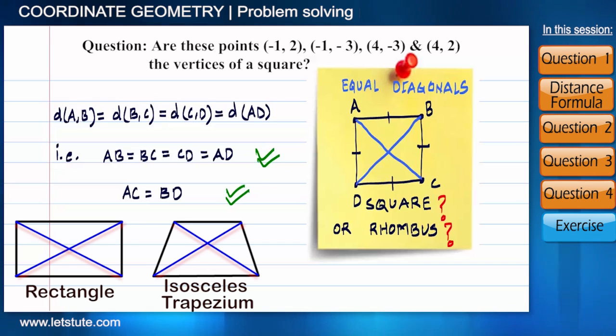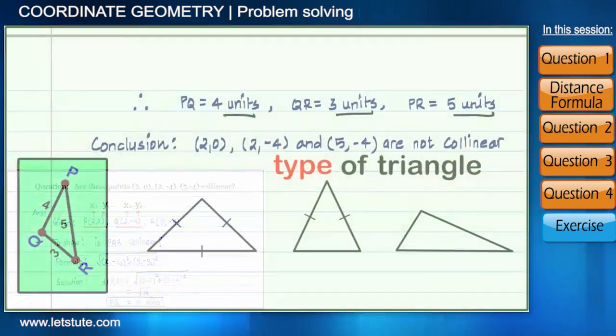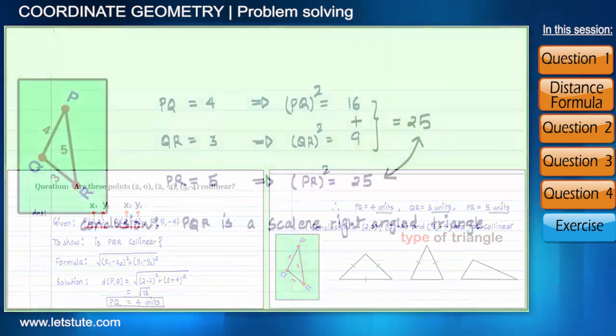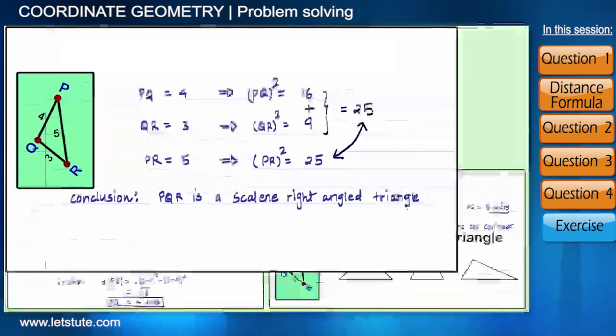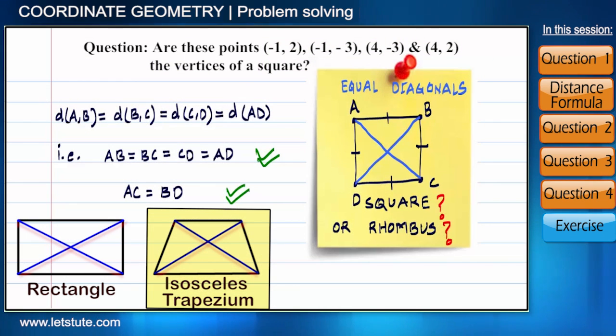So we need the information of sides along with the diagonals to confirm whether it's a square, rectangle, or trapezium. So to find out whether the given points are collinear, to recognize the different types of triangles including the right angle triangle, and to determine whether the four given coordinates form a square.